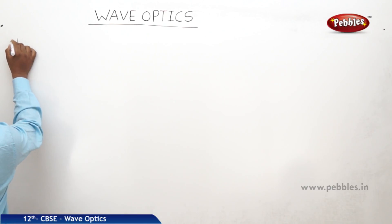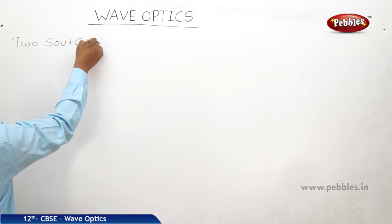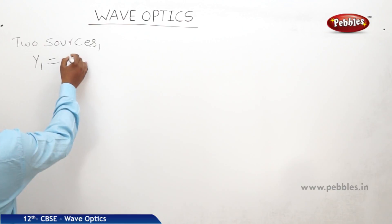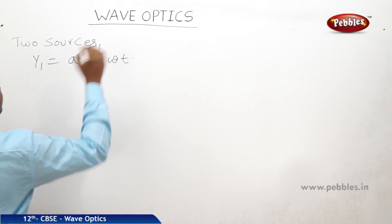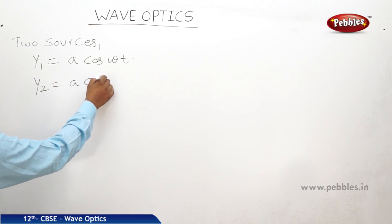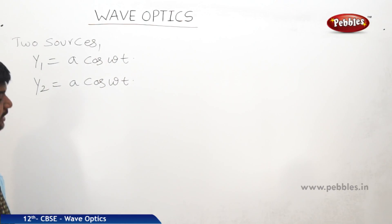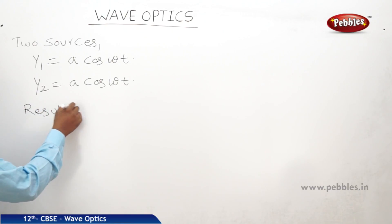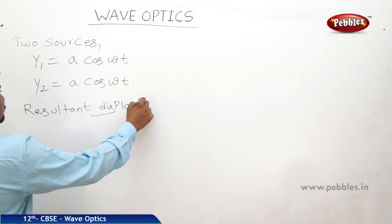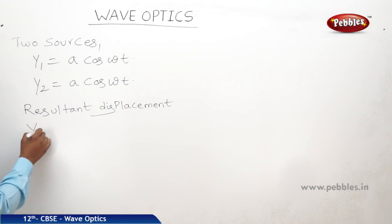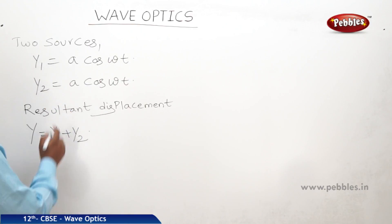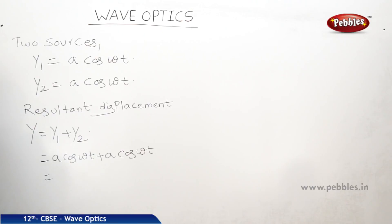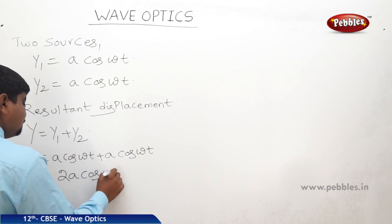There are two sources releasing two waves. The first wave has displacement y1 = a cos ωt, and y2 is also a cos ωt. This means there is no phase difference, so this is a case of constructive interference with both sources moving in the same direction. The resultant displacement y = y1 + y2 = a cos ωt + a cos ωt = 2a cos ωt.